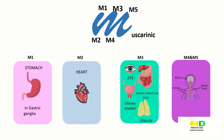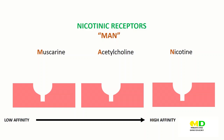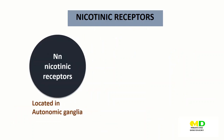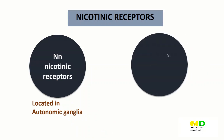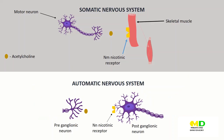Now let us check the other side: nicotinic receptors. These receptors, in addition to binding acetylcholine, also recognize nicotine but show only a weak affinity for muscarine. Nicotinic receptors are divided into two types: NN receptors and NM receptors. NN is located in the autonomic ganglia of the autonomic nervous system, and NM is located in the neuromuscular junction in skeletal muscles of the somatic nervous system. Here we have a summarized chart of cholinergic receptors.